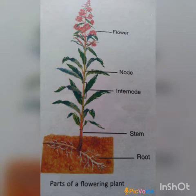The stem is the strongest part of the tree and it is also known as the trunk. The thick brown covering on the trunk is called the bark and it provides protection to the stem.